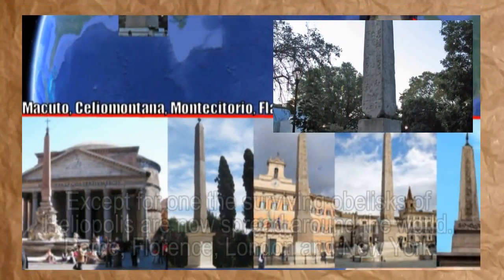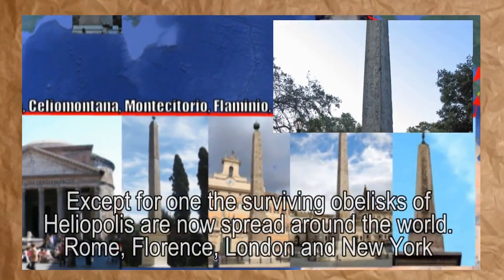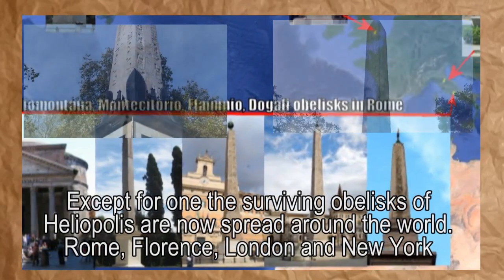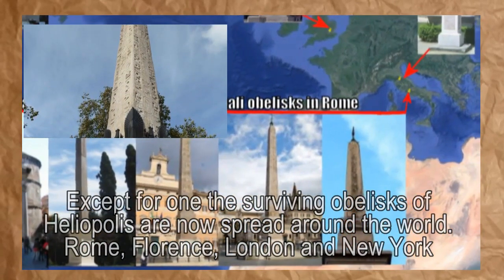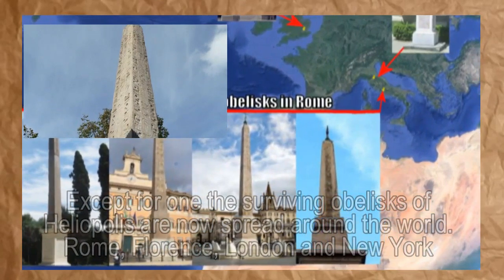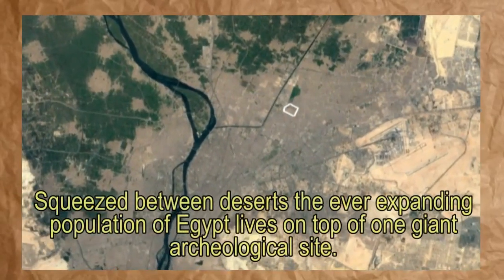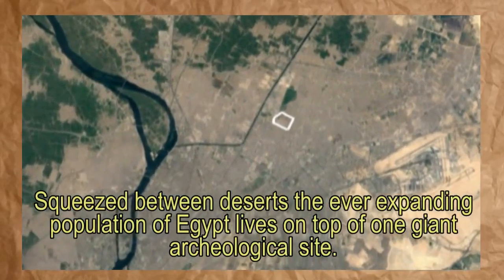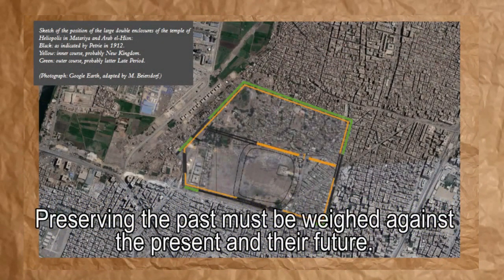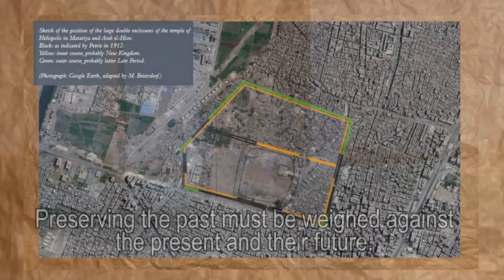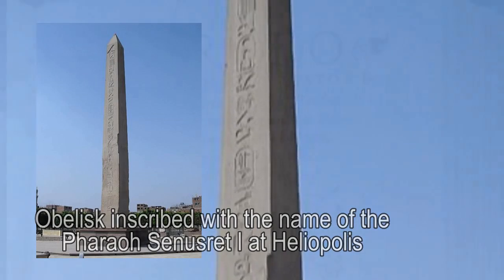If just the obelisks of Heliopolis that were moved to great cities such as Rome, Florence, London, and New York were returned — if the grand statues and walls were still in anything near their original condition, if it hadn't been swallowed by the urban sprawl of Cairo and buried beneath over 10 meters — 33 feet — of trash — the temple of Ra-Atum at Heliopolis would be on every must-see list for Egyptian tourists. Yet sadly it is now not only largely forgotten but under increased threat, as without the tourist revenue generated by sites such as the pyramids and Karnak, and with the pressures of Cairo's ever-expanding population giving developers ever more influence, the once great temple of Heliopolis may soon be reduced to a small park surrounding its single surviving complete obelisk.